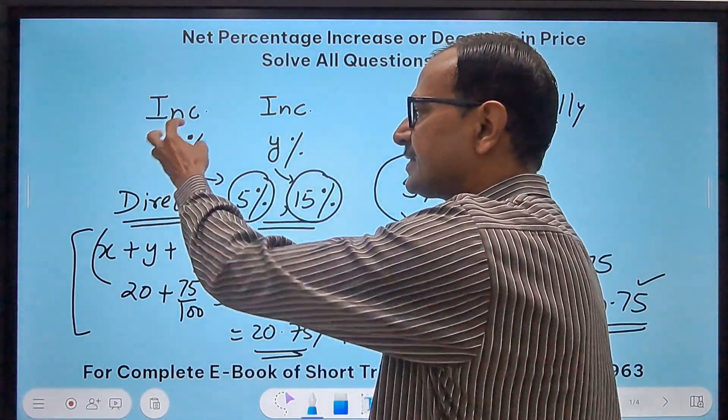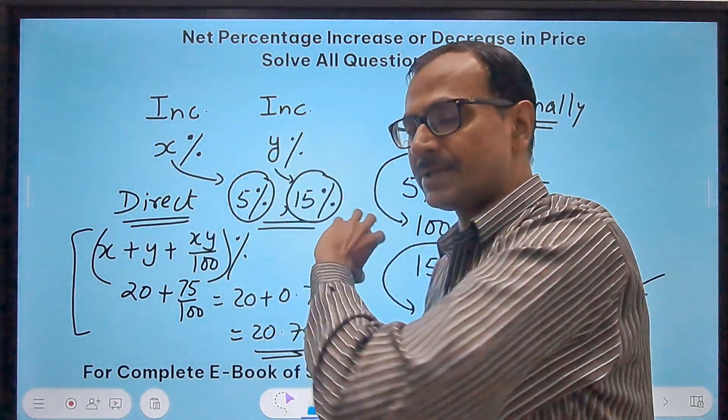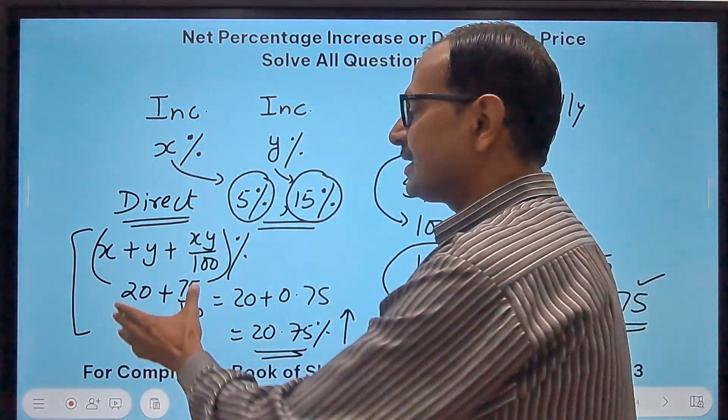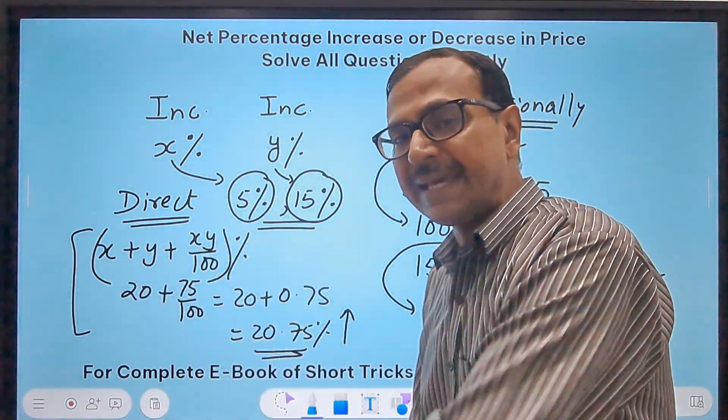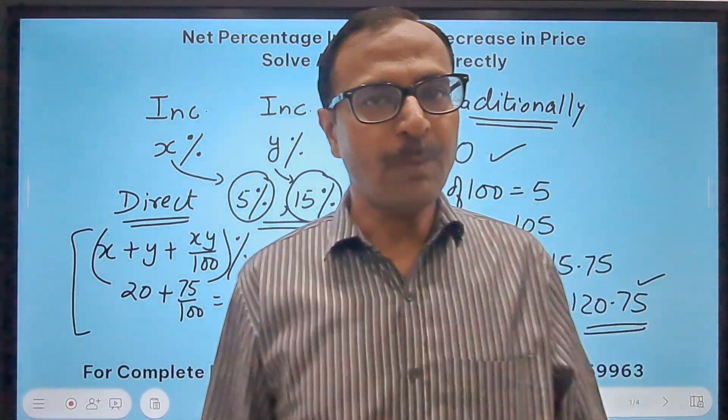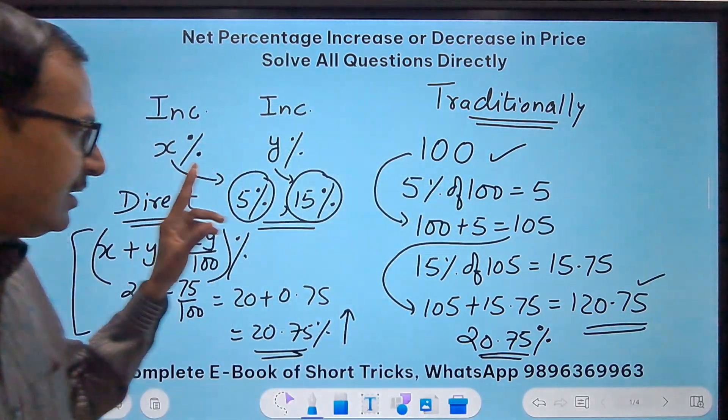This is only the first case when the two variations are both increase in the price. First variation is x percent increase, second variation is y percent increase, and so there is x plus y plus xy upon 100 percent increase - traditional and direct.